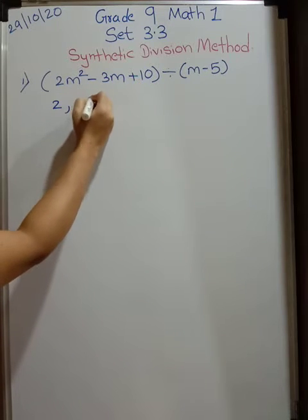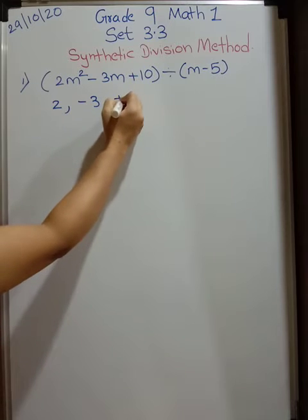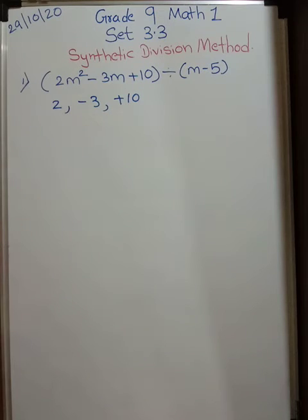What is coefficient form? 2, minus 3, plus 10. This is coefficient form.